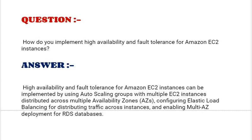Next interview question: How do you implement high availability and fault tolerance for Amazon EC2 instances? High availability and fault tolerance for Amazon EC2 instances can be implemented by using auto scaling groups with multiple EC2 instances distributed across multiple Availability Zones, configuring Elastic Load Balancing for distributing traffic across instances, and enabling multi-AZ deployment for RDS databases.